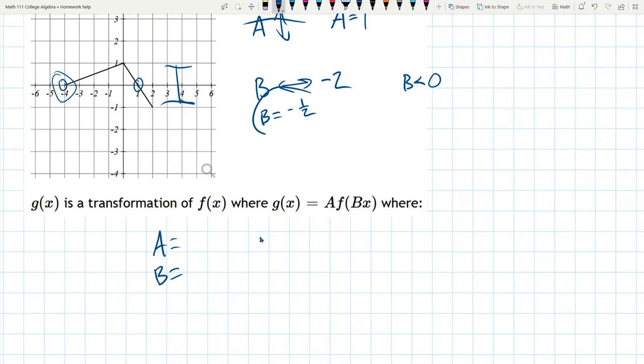And just make sure your horizontal stretch is the opposite of what it looks like. So it looked like it was, you multiply by negative 2, but when you actually fill in the value for b, it's negative 1 half, because that's the opposite of multiplying by negative 2.